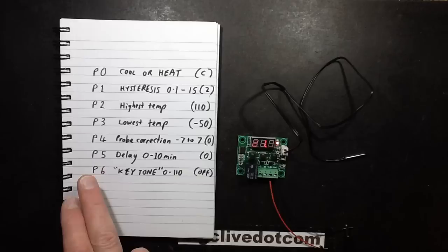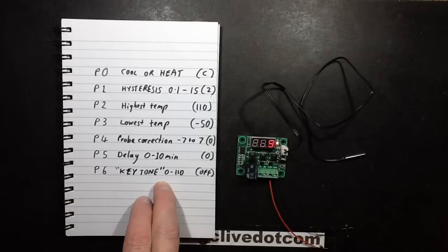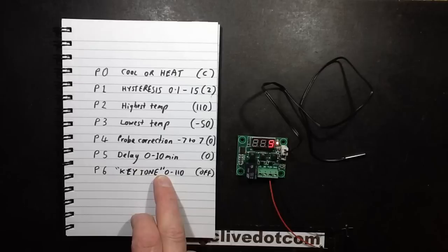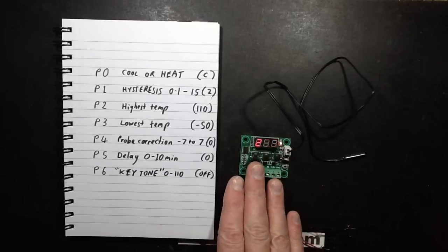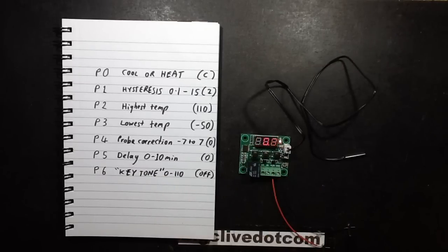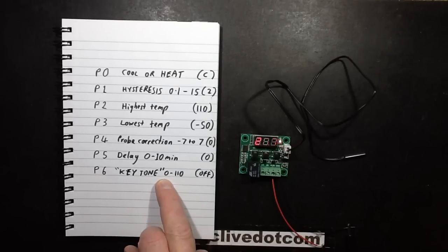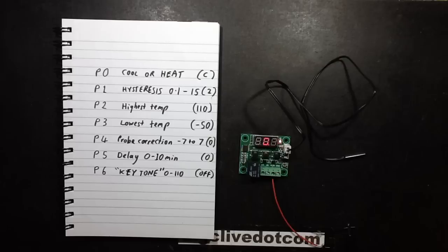And then there's P6. All I could find about this was ketone. And I don't know if this also can drive beepers or something like that. I haven't a clue what ketone is, but it lets you choose zero to 110. And I played about that setting and I bricked the controller, completely bricked it.